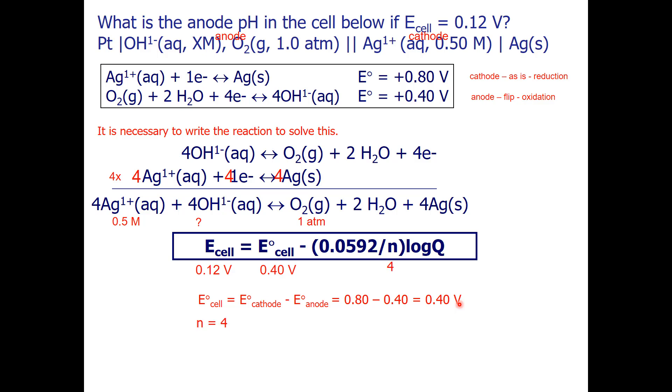N stands for moles of electrons transferred, which is what I use to balance the equation, so that is 4. Q will be my products over my reactants raised to the power of their coefficients. So, I will have the pressure of oxygen over my silver ion concentration to the 4th power and my hydroxide ion concentration to the 4th power.